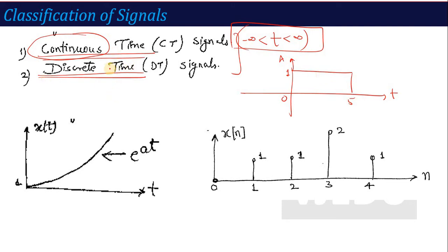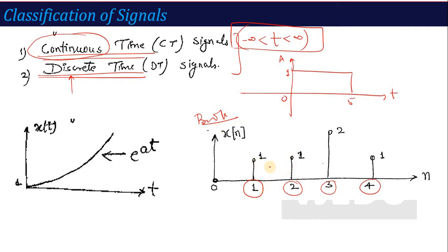What is discrete time? Discrete means particular time intervals — specifically integer time interval values. If the signal is defined only at integer time values, that is called a discrete time signal. For example, like the pages of a book: pages have complete integer values — 1, 2, 3, 4 — never floating point values like 1.1 or 1.2. So discrete means the signal is defined by integer values of time, not floating point values.